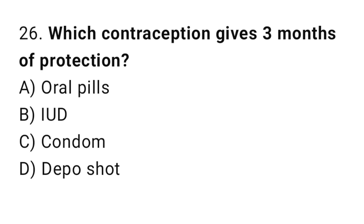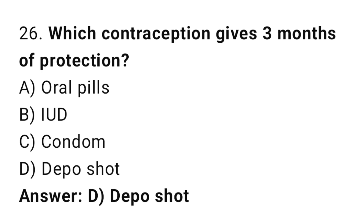Question 26: Which contraception gives 3 months of protection? The right answer is D, the Depo shot. Depo-Provera injection works for 3 months.